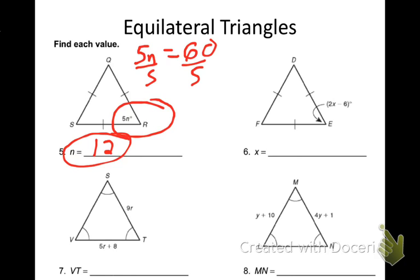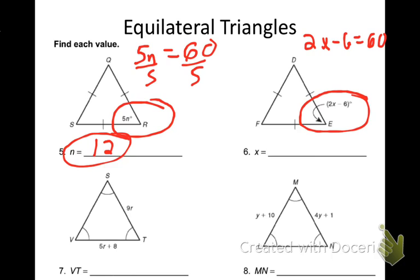A lot of geometry involves reviewing algebra concepts — the difference is you need to know the geometry properties. For example, an equilateral triangle has all sides and all angles equal to 60 degrees. Number 6: angle E equals 2x − 6. Set it equal to 60: 2x − 6 = 60. Add 6 to get 2x = 66, then divide by 2 to get x = 33.